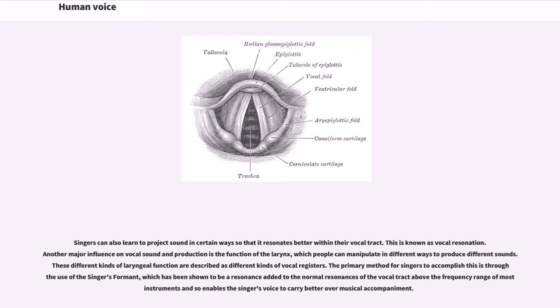The primary method for singers to accomplish this is through the use of the singer's formant, which has been shown to be a resonance added to the normal resonances of the vocal tract above the frequency range of most instruments and so enables the singer's voice to carry better over musical accompaniment.